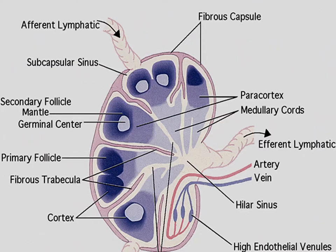If we look at the structure of a lymph node from inside, we can see a fibrous capsule, an afferent lymphatic and an efferent lymphatic after filtration. We have the cortex, the medullary cords, and also the secondary follicles including the mantle and the germinal center. So we have both primary and secondary follicles.